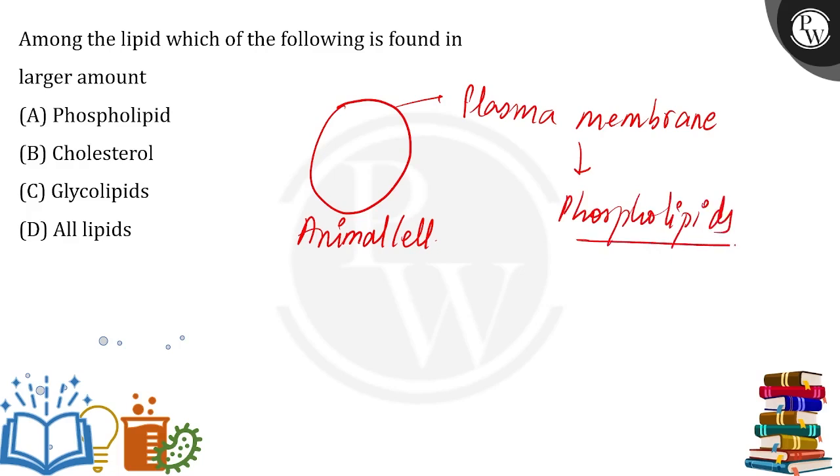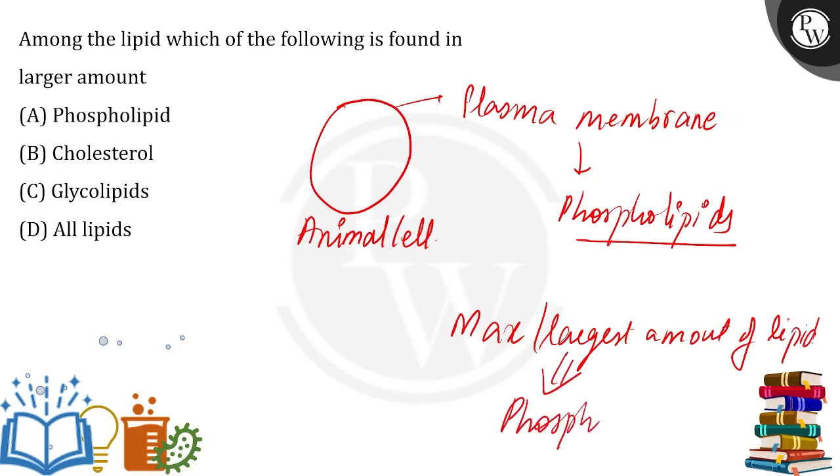And there's a phospholipid bilayer present in this plasma membrane and thereby the maximum or the largest amount of lipid, largest amount of lipid found in our body, that is the phospholipid. Hence, the correct answer is option A.